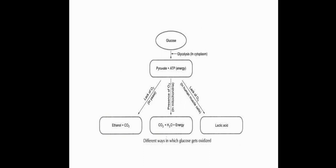After the production of pyruvate, if aerobic conditions are sustained, the pyruvate will be transformed and enter the mitochondrial matrix, where the TCA cycle occurs in the presence of oxygen, giving us carbon dioxide, water, and ATP. If there is a lack of oxygen, or the organism is anaerobic — like yeast or bacteria — from this pyruvate they will produce ethanol and carbon dioxide.